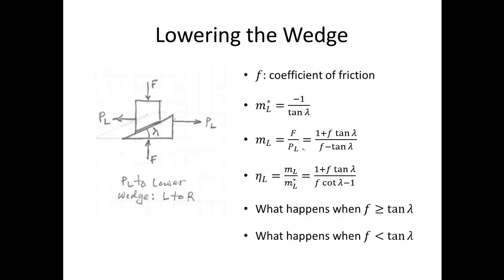From that analysis, the mechanical advantage for lowering is (1 + f·tan λ) / (f − tan λ). The theoretical mechanical advantage for lowering is −1/tan λ, where the negative sign indicates the direction of the input force has changed. Looking at this lowering mechanical advantage, we need to be very careful about the denominator, since it can cause problems — we want the mechanical advantage to be a positive, meaningful value, so we must examine what happens depending on whether f is greater or less than tan λ.